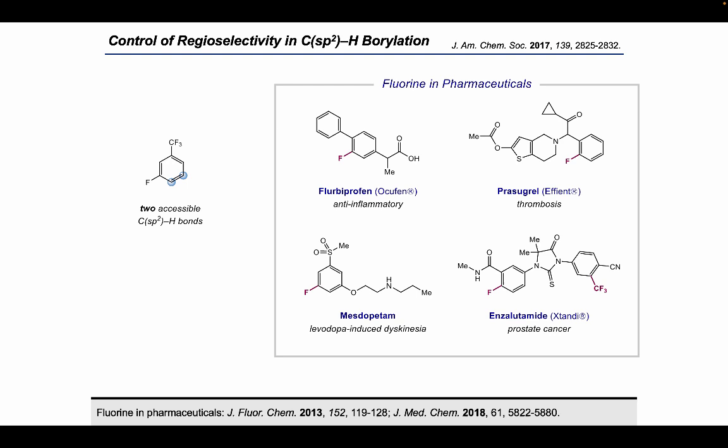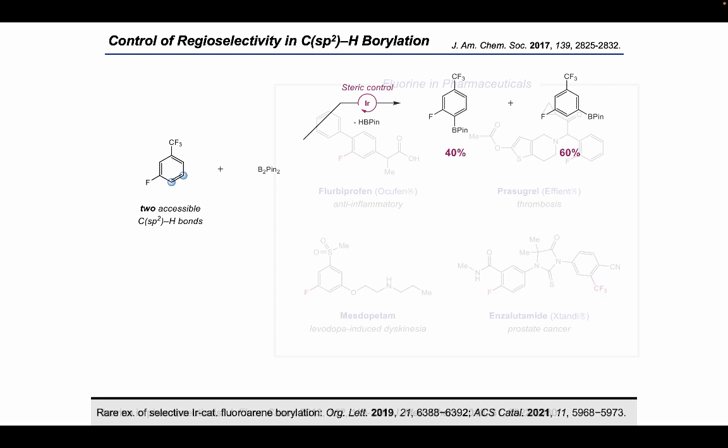A natural question is whether these catalysts can distinguish between electronically differentiated C-H bonds in similar steric environments. This question is especially relevant due to the prevalence of fluorinated arenes in small molecule pharmaceuticals. Fluorine is often incorporated into drug molecules to affect membrane solubility and metabolism. However, fluorine is small and doesn't coordinate very strongly to transition metals, so conventional steric and directing group approaches are not typically useful for C-H borylation of fluoroarenes. Using typical BIPY-iridium catalysts, borylation of a substrate with two sterically accessible but electronically distinct C-H bonds gives modest selectivity favoring functionalization meta to the fluorine in a 60:40 ratio.